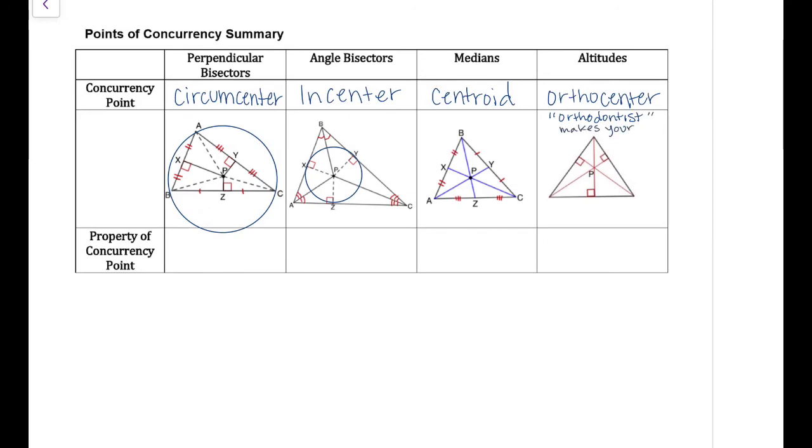Remember, orthodontists make your teeth straight. They make it have right angles. Centroid, it's the center of the opposite side. So that's the ways that you can remember how to find which one is which.